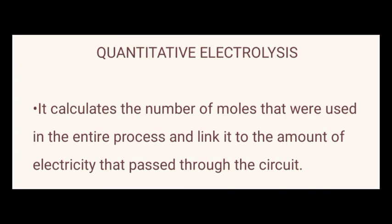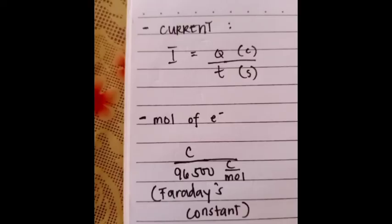We will explain quantitative electrolysis. The goal is to calculate the numbers of moles used in the entire process and link it to the amount of electricity that passed through the circuit. The formula for this uses current to find the mole of electrons. For moles of electrons, we use Faraday's constant, which is 96,500.